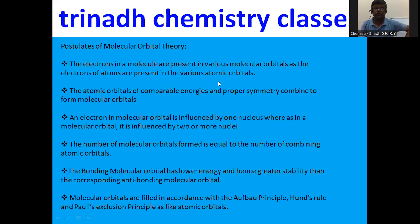Atomic orbitals of comparable energies and proper symmetry combine to form molecular orbitals. An electron in an atomic orbital is influenced by one nucleus, whereas a molecular orbital is influenced by two or more nuclei. Simply put, an atomic orbital is monocentric whereas a molecular orbital is polycentric.